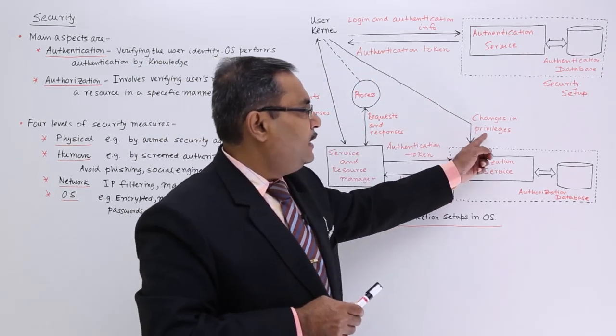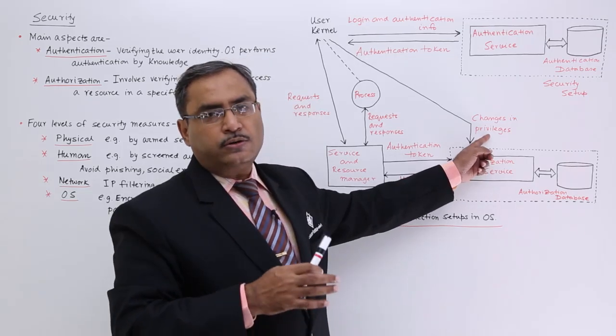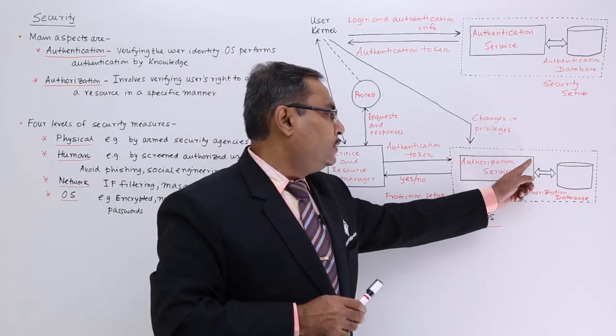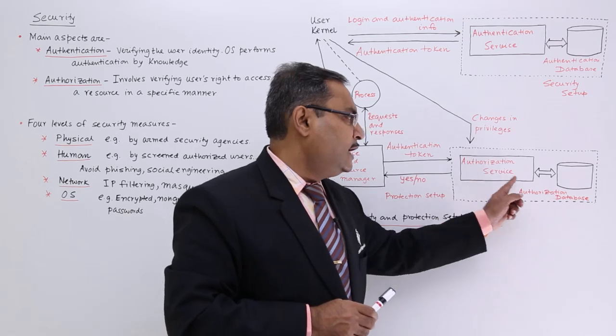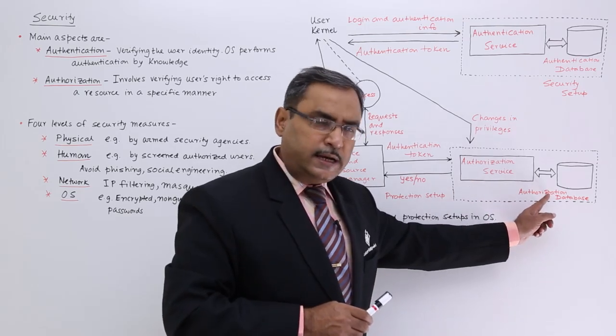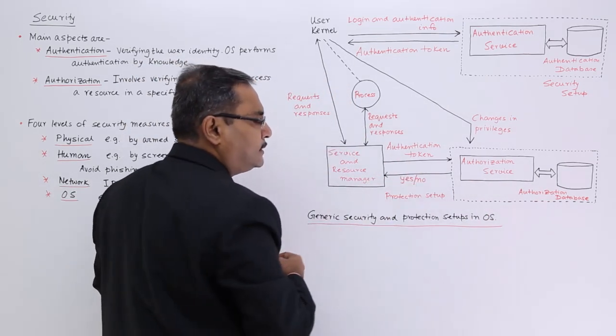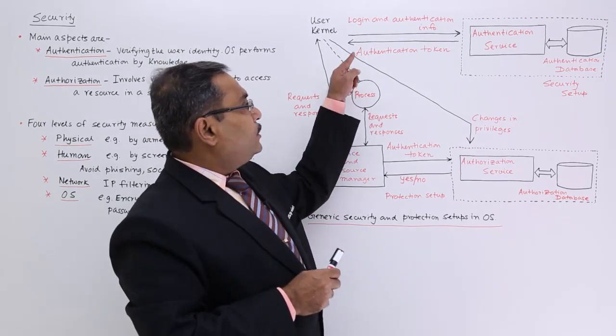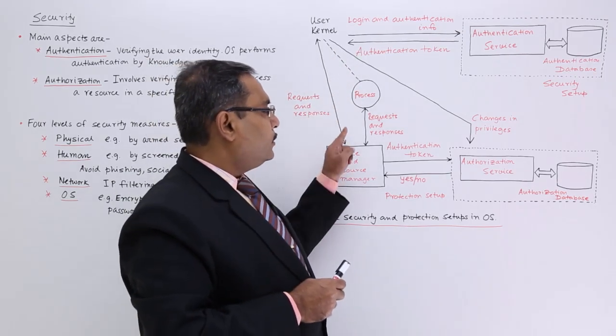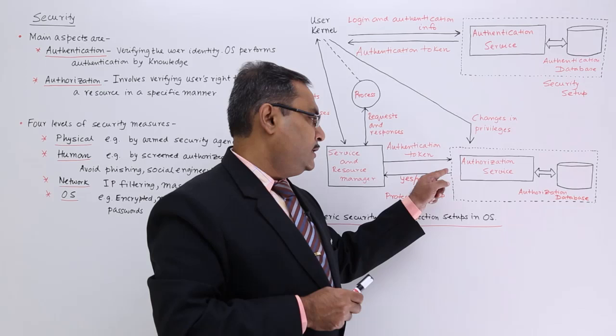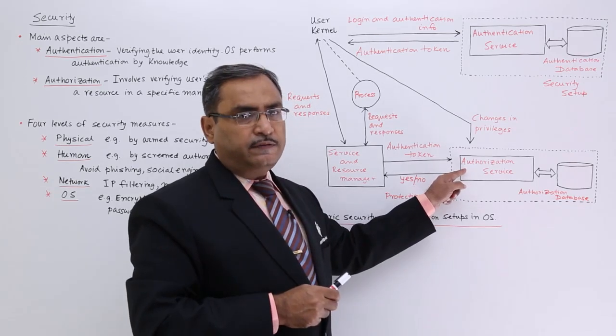Now changes in the privileges, whether he or she can read or write or execute and this is the authorization service and the respective authorization database. And here also, we will be having this transfer of this authentication token, whatever kernel has got. So authentication token will be passed and then this authorization service will say,